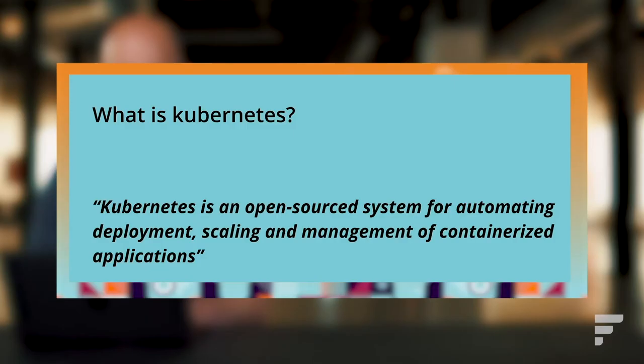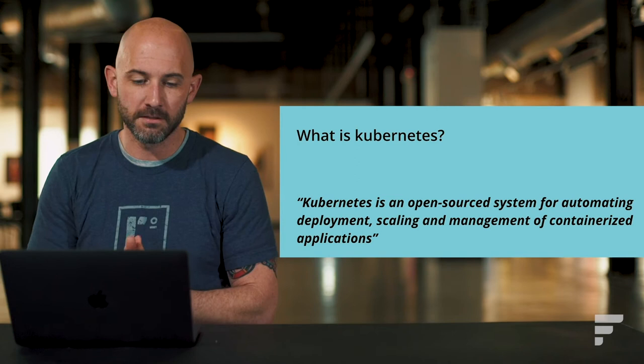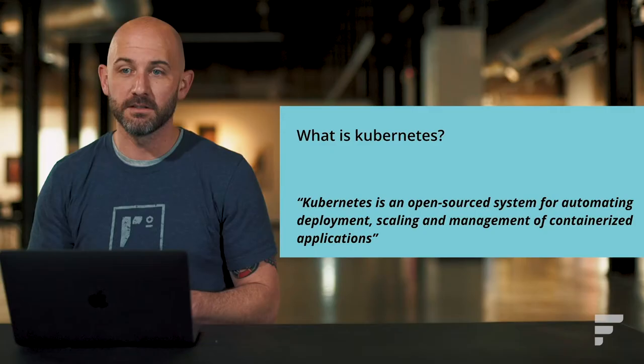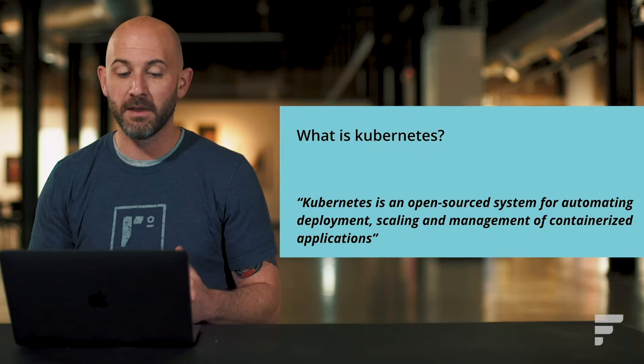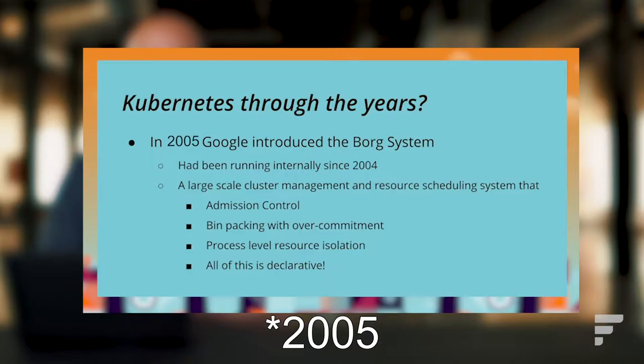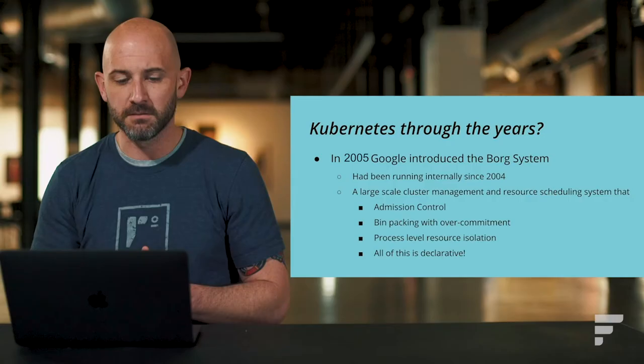For the second part of our Kube 101, we're going to talk about the history of Kubernetes and the value proposition it offers. By definition from the Kubernetes community, Kubernetes is an open-source system for automating deployment, scaling, and management of containerized applications. Kubernetes came about from Google's Borg system, which they had been running internally since about 2004. In 2015, Google introduced the Borg system publicly — it started as a small project with only two or three people, and was a large-scale cluster management and resource scheduling system.